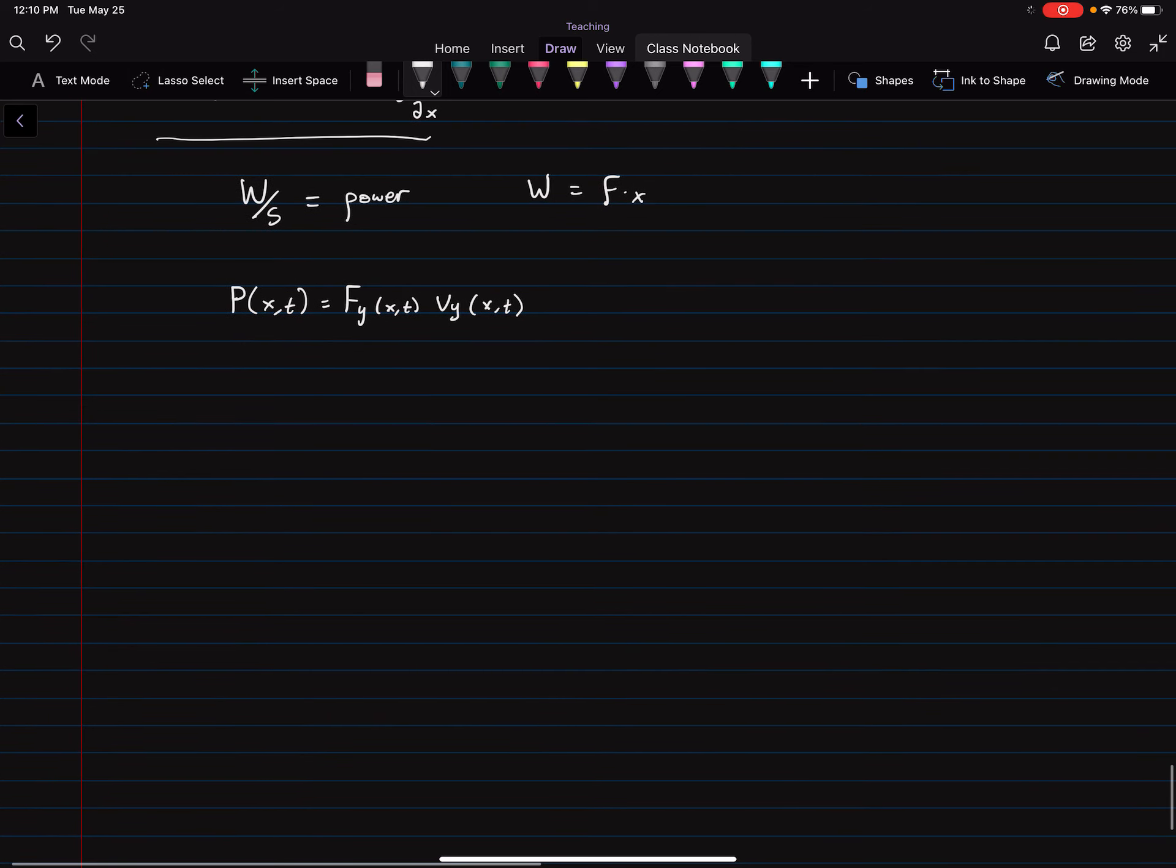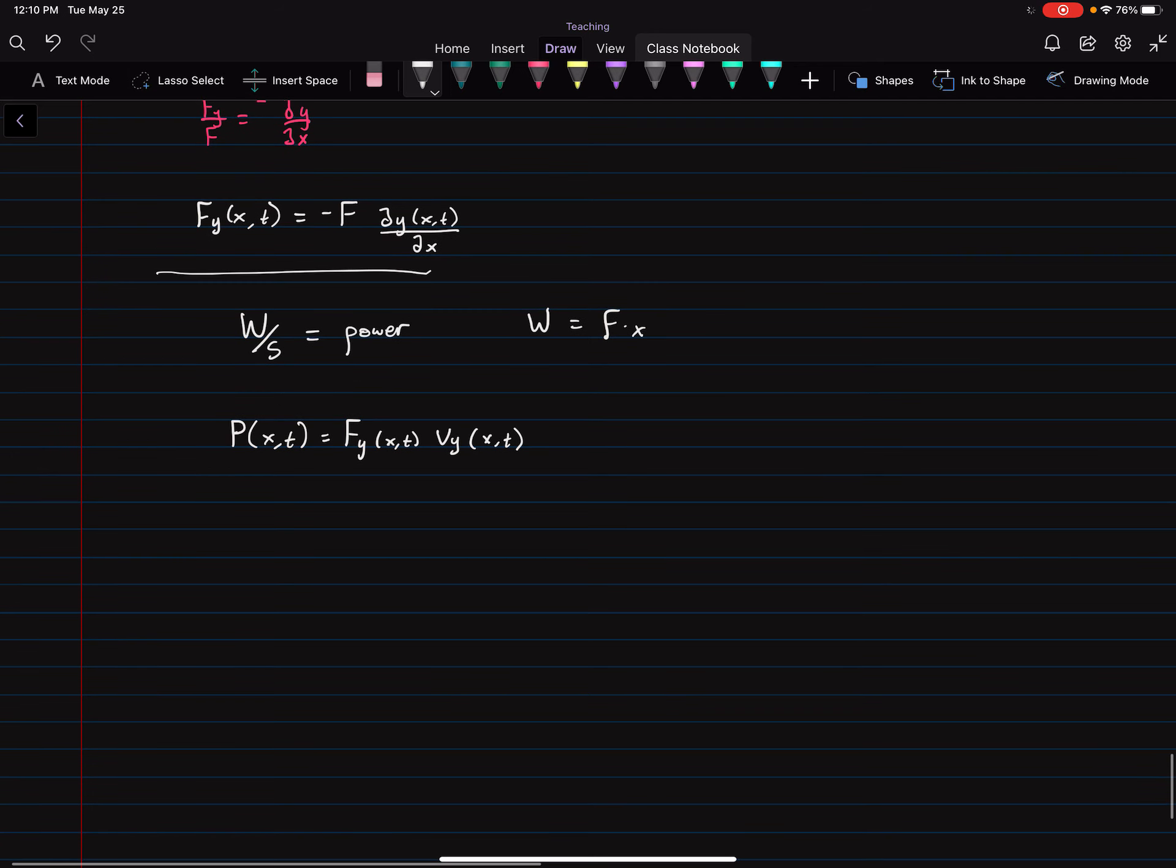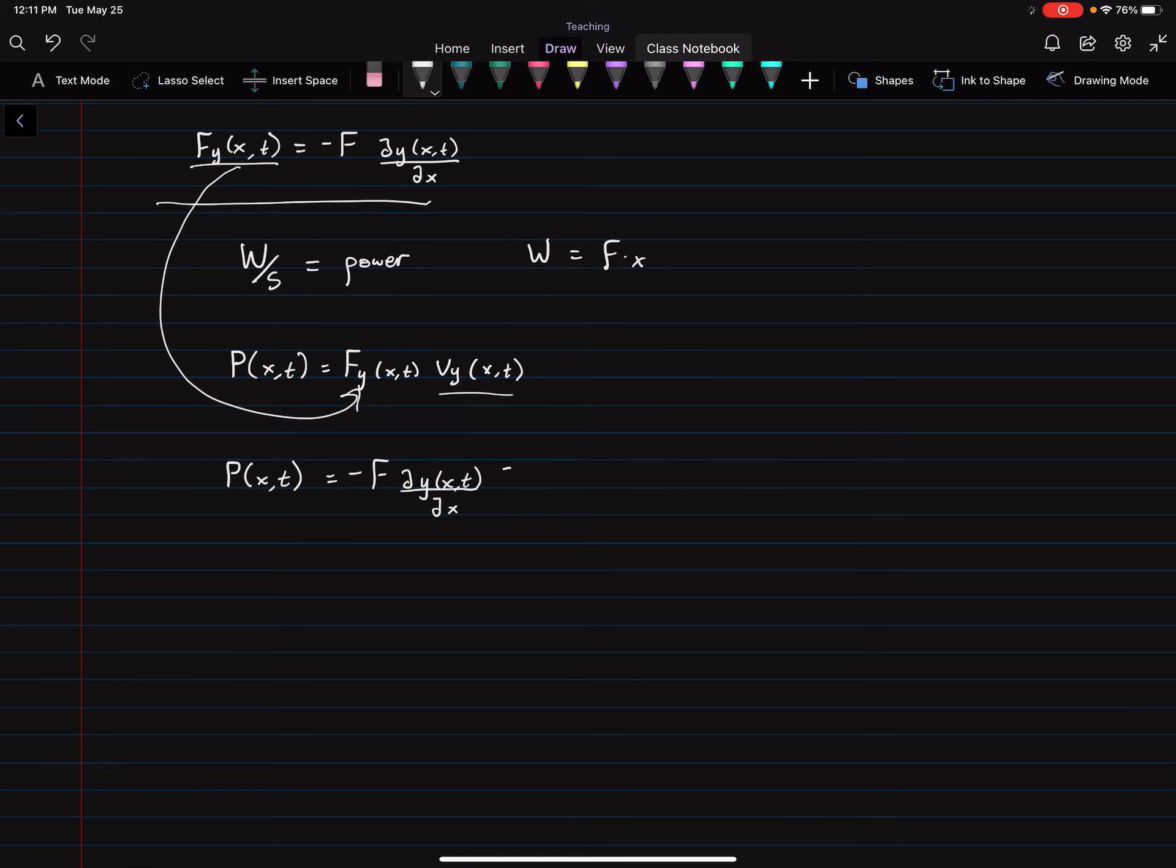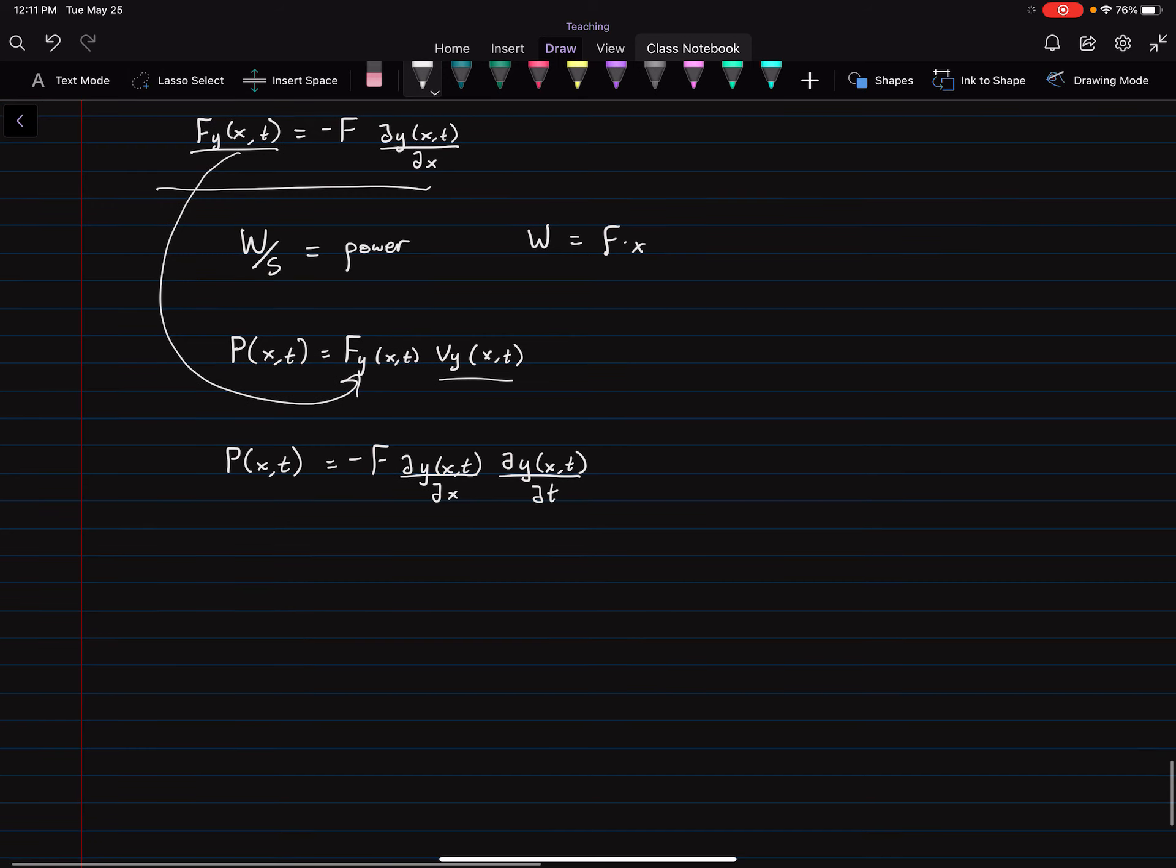So we can expand this using our expression that we set aside back up here. And we can stick this guy right in here. So now we'll say power as a function of X and T is equal to negative F times the partial derivative of Y with respect to X times the partial derivative of Y with respect to T, because it's velocity.